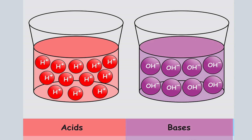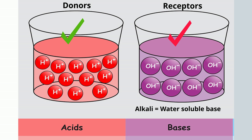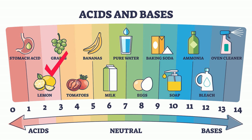Hydrogen ions determine whether a solution is an acid or a base. A base that is water-soluble is called an alkali. Acids are hydrogen ion donors, and alkalis are hydrogen receptors. A substance with a pH lower than 7 is considered acidic, and greater than 7 is an alkali. 7 is neutral.